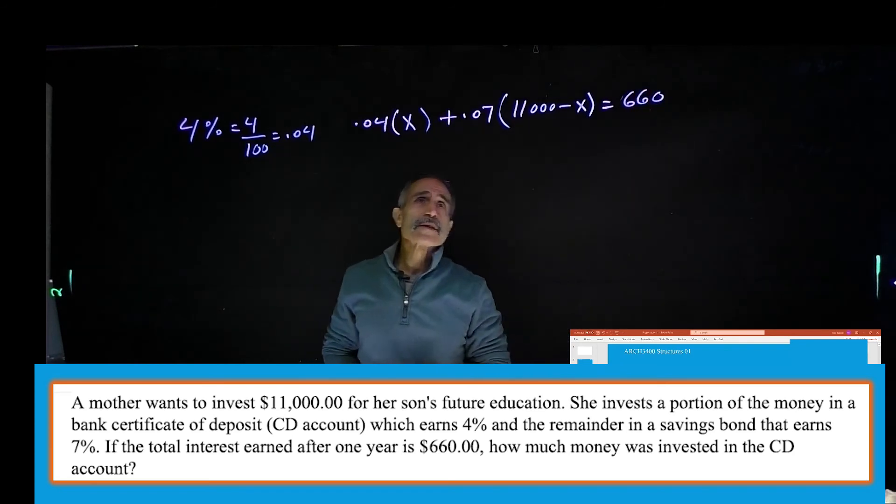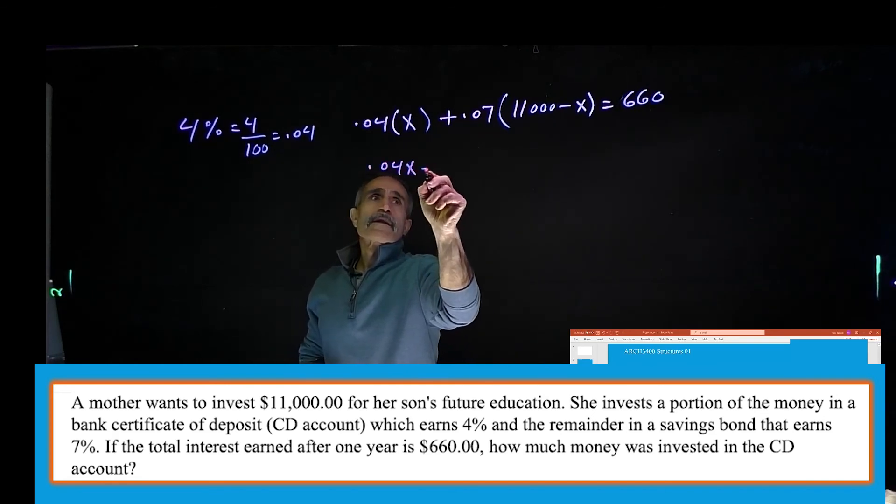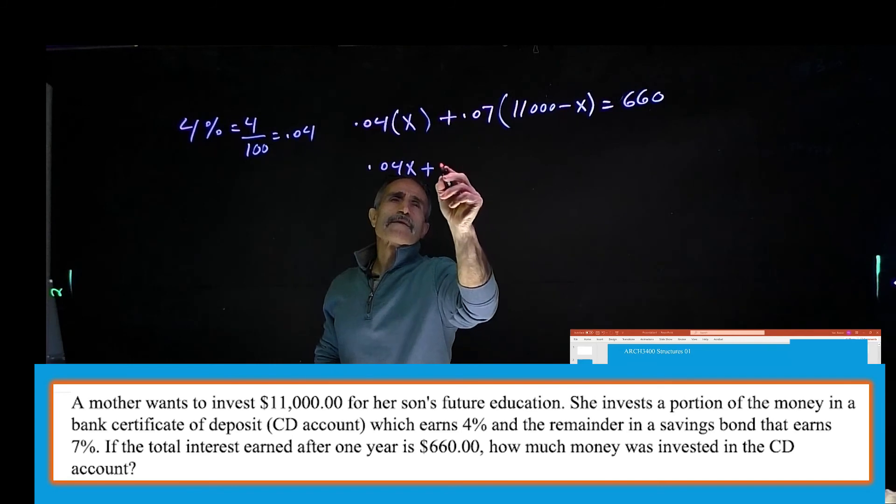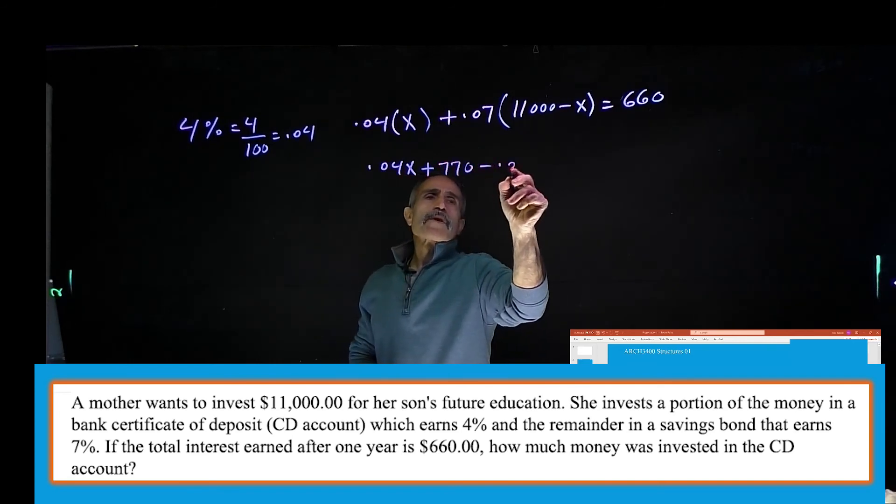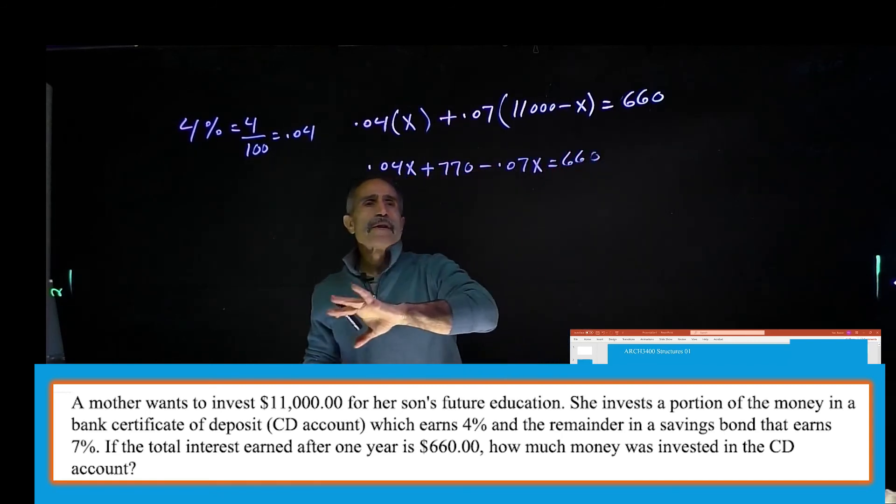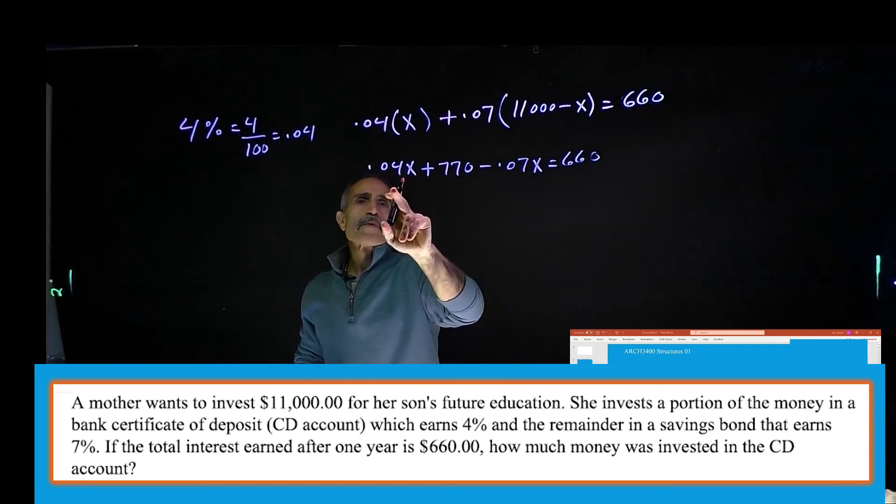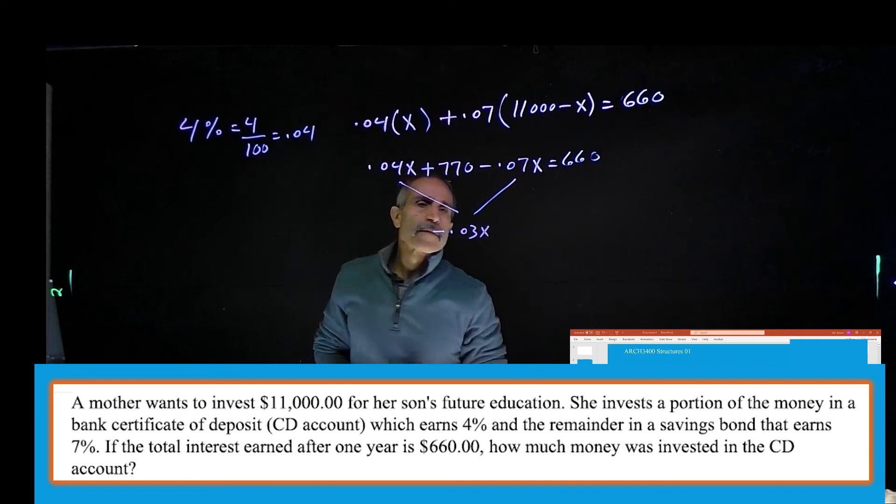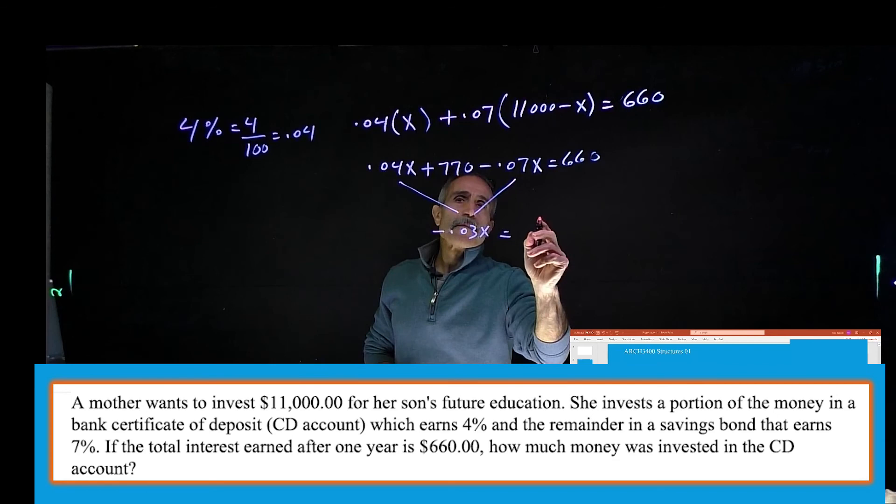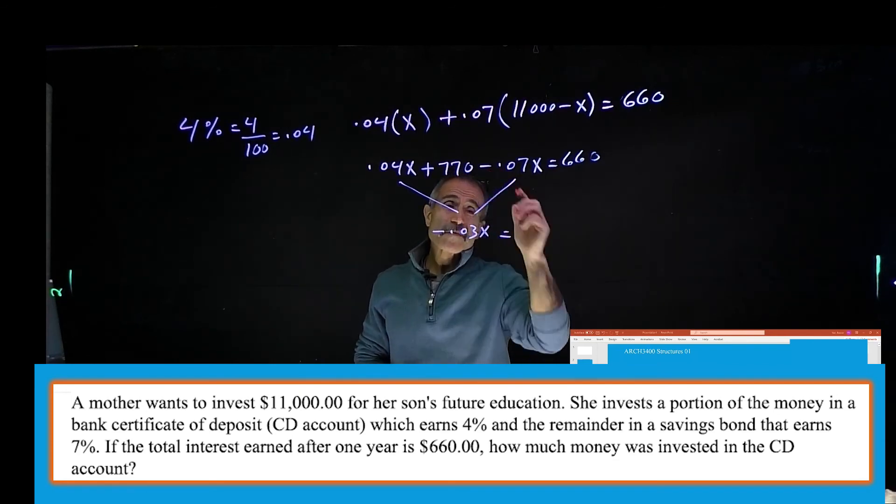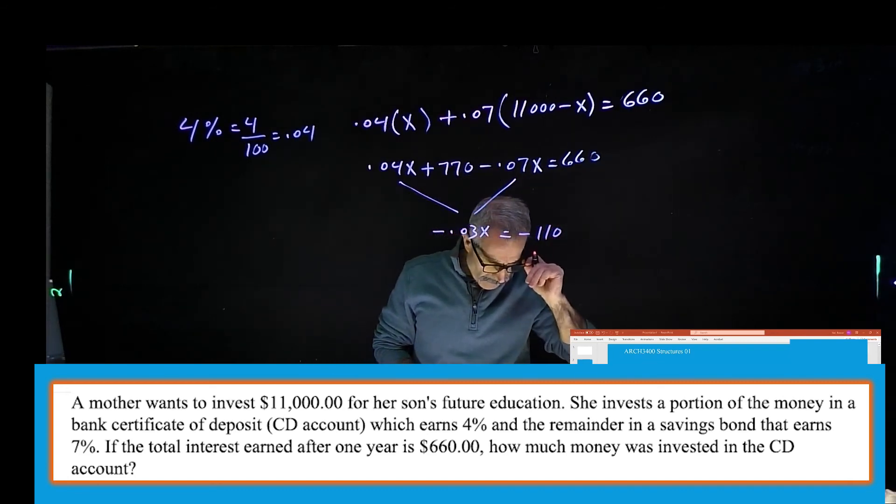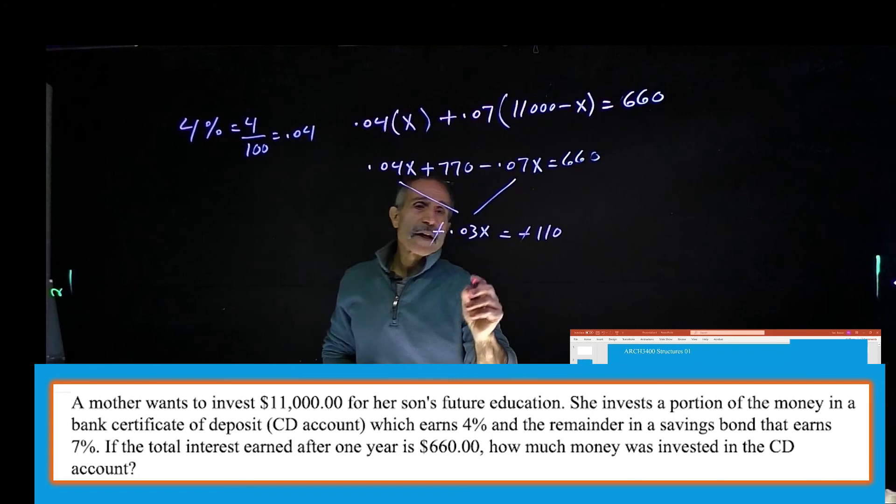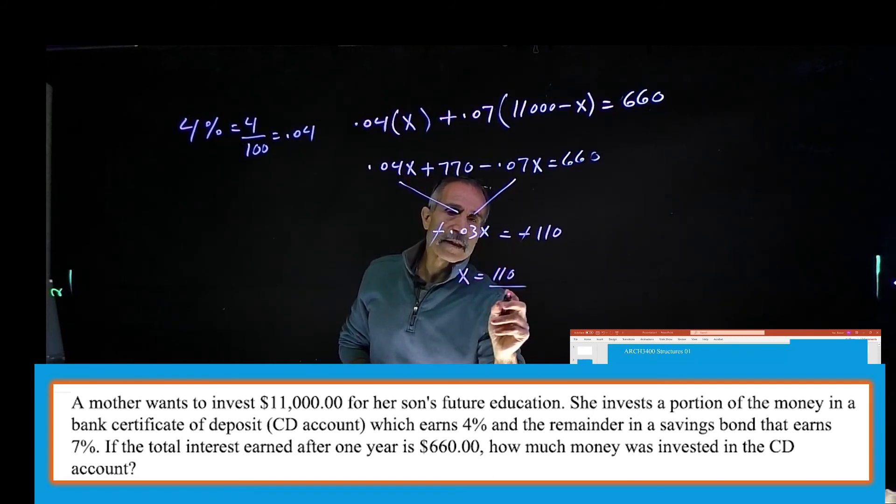So I've got 0.04X + 0.07 times (11,000 - 0.07X) = 660. Now let's rearrange. Put all the X on one side. So 0.04X - 0.07X comes out to -0.03X. And 0.07 times 11,000 is 770. So that becomes -0.03X + 770 = 660. So -0.03X = 660 - 770 = -110. Minus and minus cancel, so 0.03X = 110. X becomes 110 divided by 0.03.